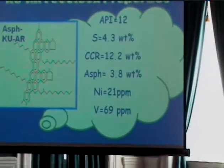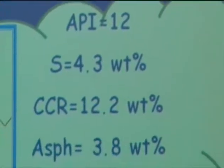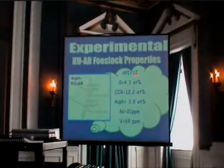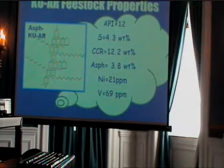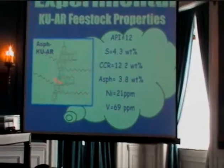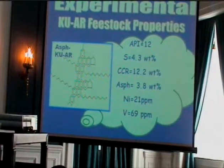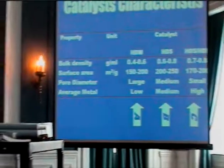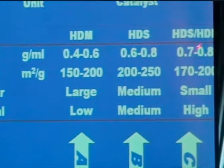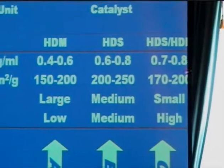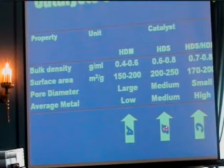The feedstock used in this study is a typical atmospheric residue obtained from Kuwait export crude. The major characteristics are API 12, sulfur around 4.3%, Conradson carbon 12, asphaltene 3.8%, and total metal around 88 ppm. The catalysts used in the study are three: the first dedicated for HDM, the second for HDS, and the third for HDS/HDN. For simplicity, I will refer to them as catalyst A, catalyst B, and catalyst C.